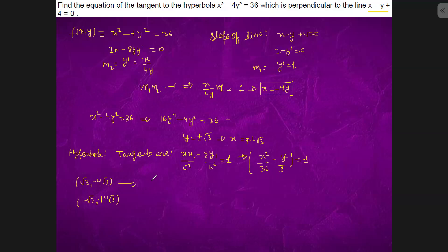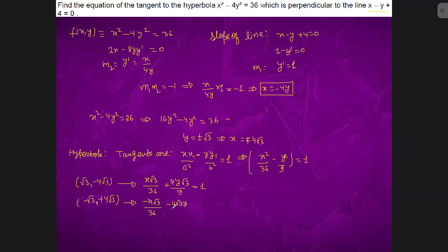Using the first point, x₁ = -4√3 and y₁ = √3. Substituting into the tangent formula: x·(-4√3)/36 - y·√3/9 = 1, which simplifies to -4√3·x/36 - √3·y/9 = 1.